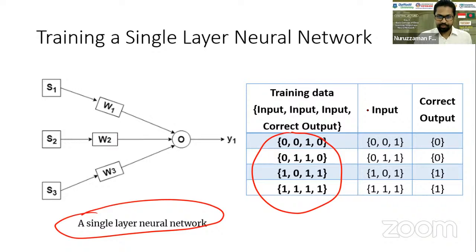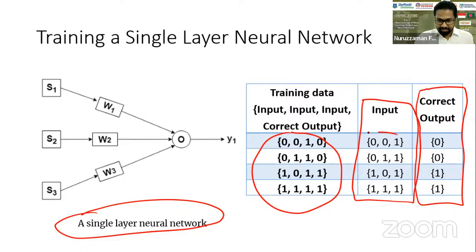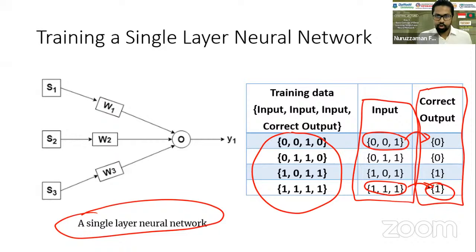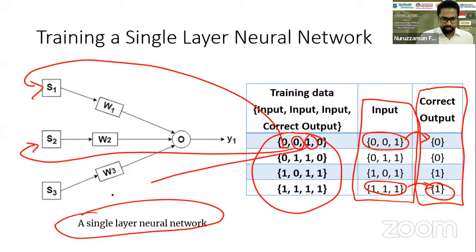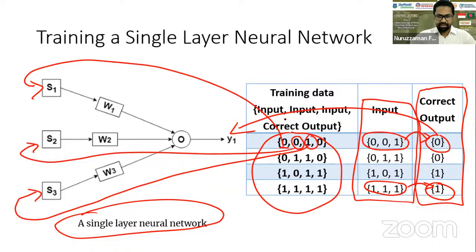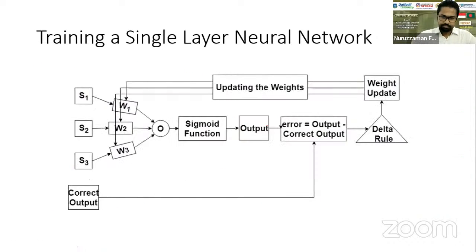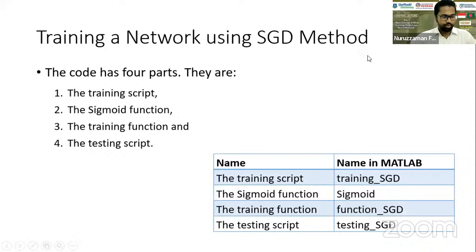In supervised learning, the training data comes in input and corresponding correct output pairs. For these sets of input, we are expecting zero output. For another set of input, we are expecting one as the output. For example, zeroes go through the three input nodes and should generate zero at the output. If that happens, the network has learned properly. Let's be organized to write the code.